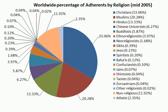The period of the composition, redaction and commentary of these texts is known as the Vedic period, which lasted from roughly 1750 to 500 BCE. The philosophical portions of the Vedas were summarized in Upanishads, which are commonly referred to as Vedanta, variously interpreted to mean either the last chapters or parts of the Veda, or the object, the highest purpose of the Veda.